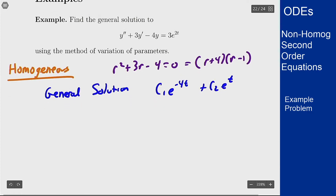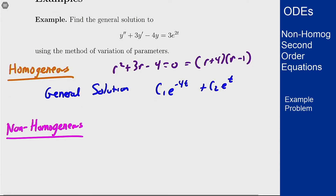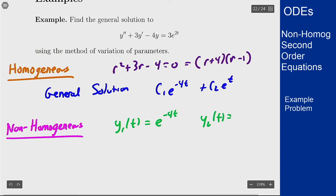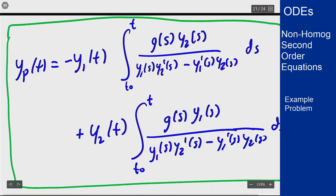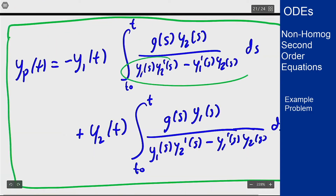Now we solve the non-homogeneous part using variation of parameters. We start by labeling our homogeneous solutions: y1 of t is e to the minus 4t and y2 of t is e to the t. The formula we need for variation of parameters requires the expression in the denominator, which we need to figure out before plugging into the problem.